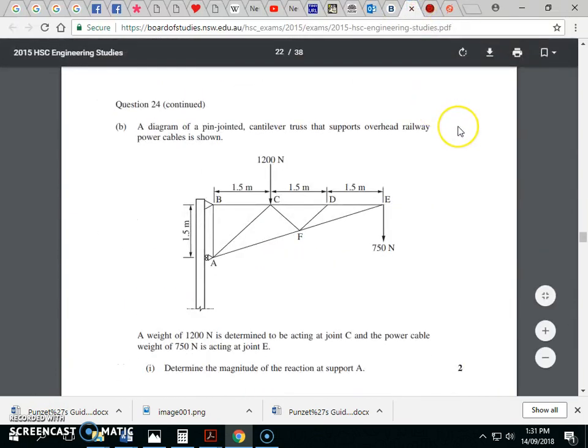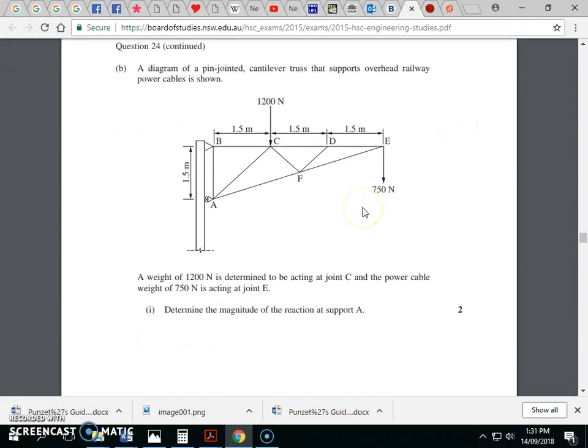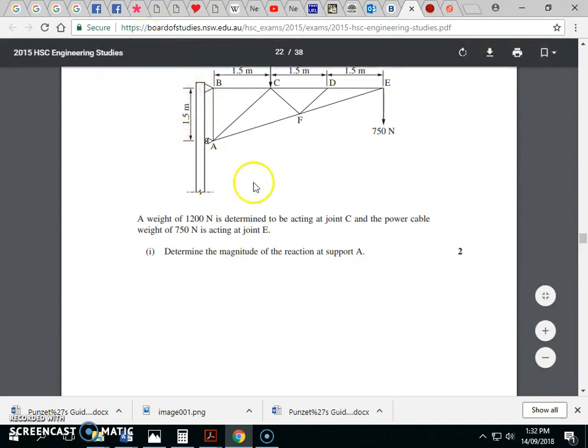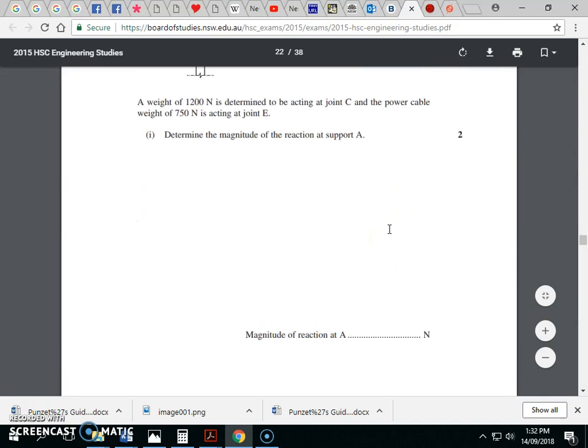The next question is a truss. I'm not going to go through the details because we've already done this on the board. But the very quick version is we have to determine the reaction at A. To do that, we'll take moments about B. We only have three forces: the 1200 newtons times 1.5 plus 750 times 4.5 minus 1.5 times reaction A. We plug that into the calculator and we'll get A. To find B, the next question, we'll do that by finding the sum of horizontal and vertical forces. Once we've found reaction B horizontal and vertical, we can combine those using Pythagoras' theorem, and then find the angle using arctan or inverse tan.